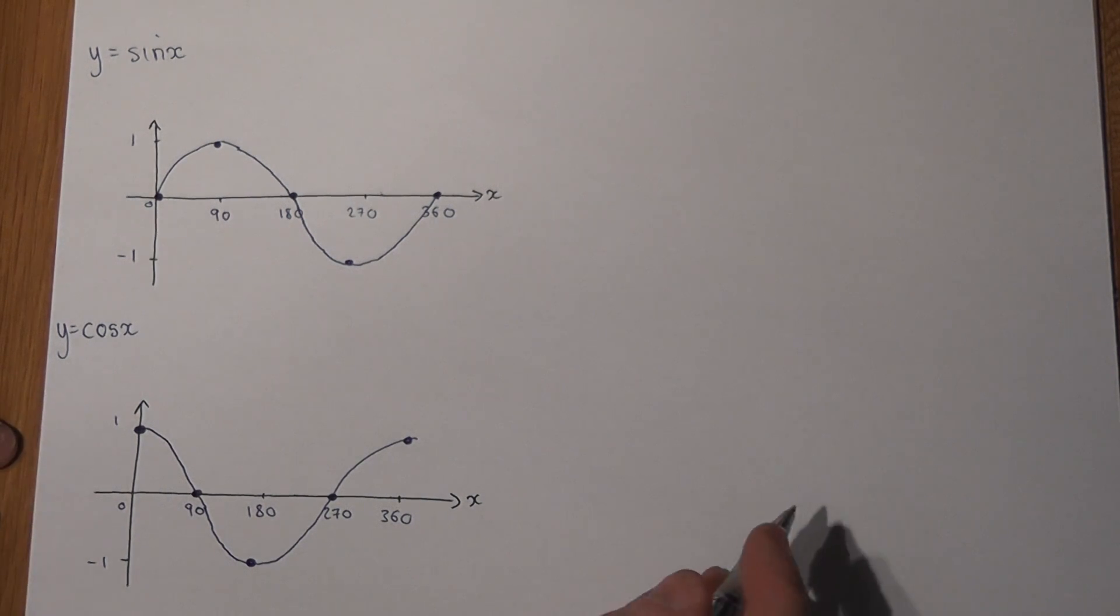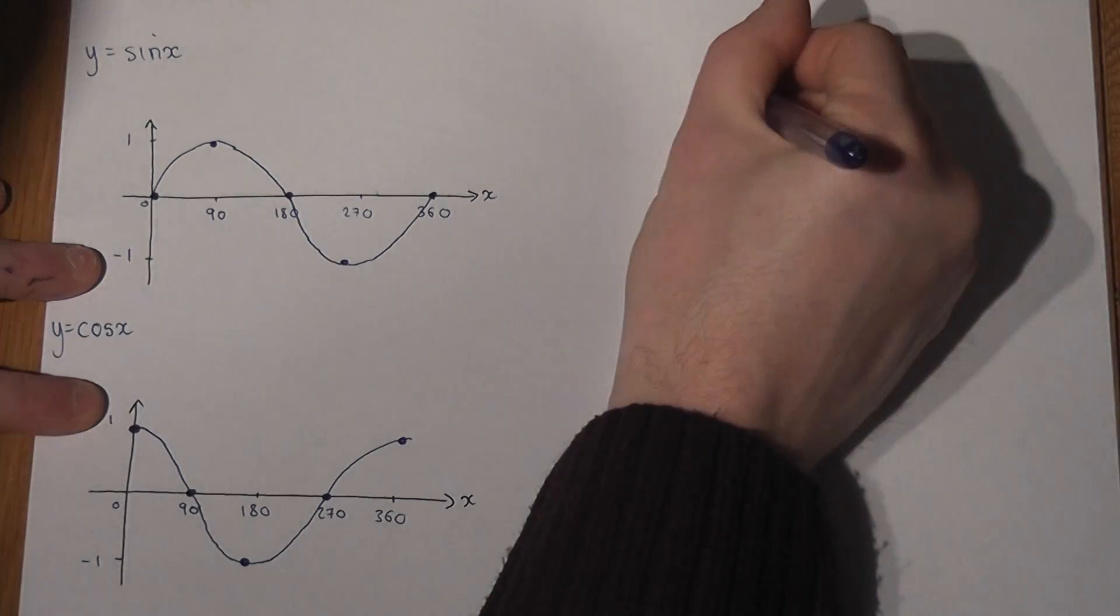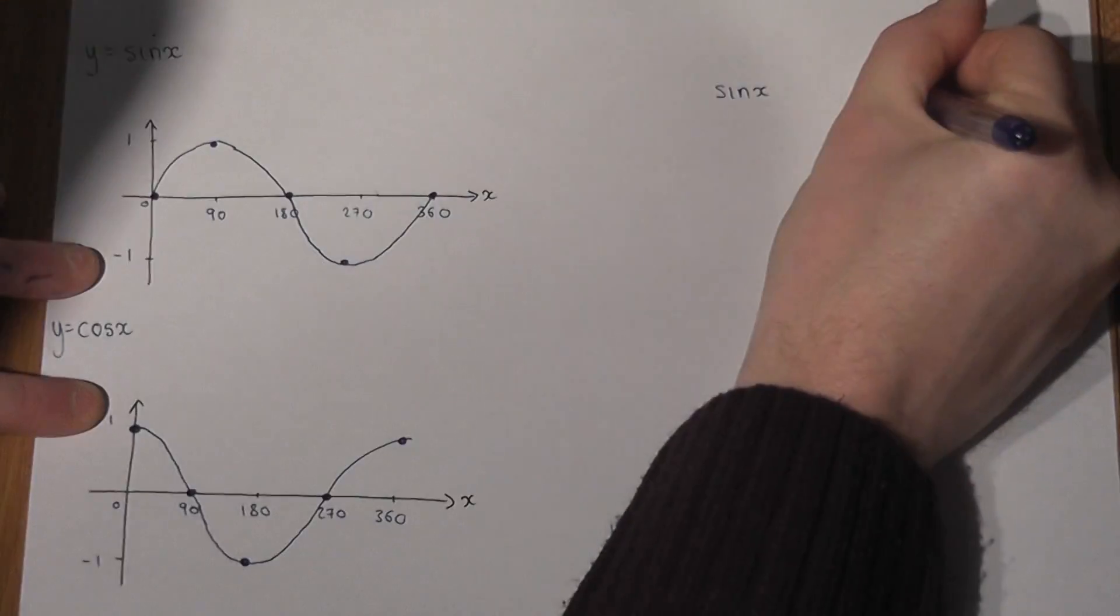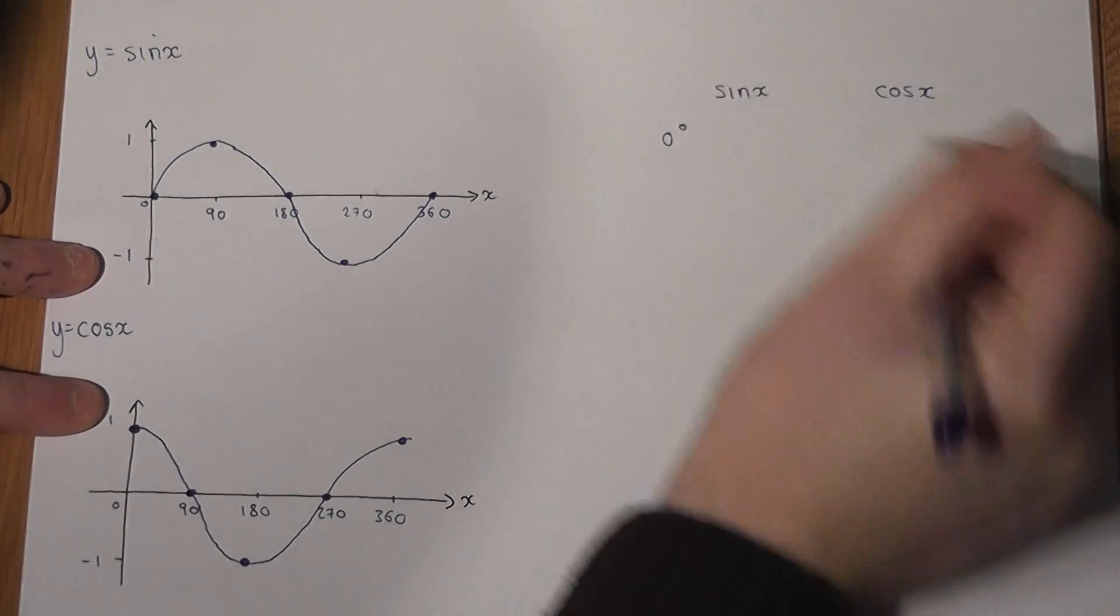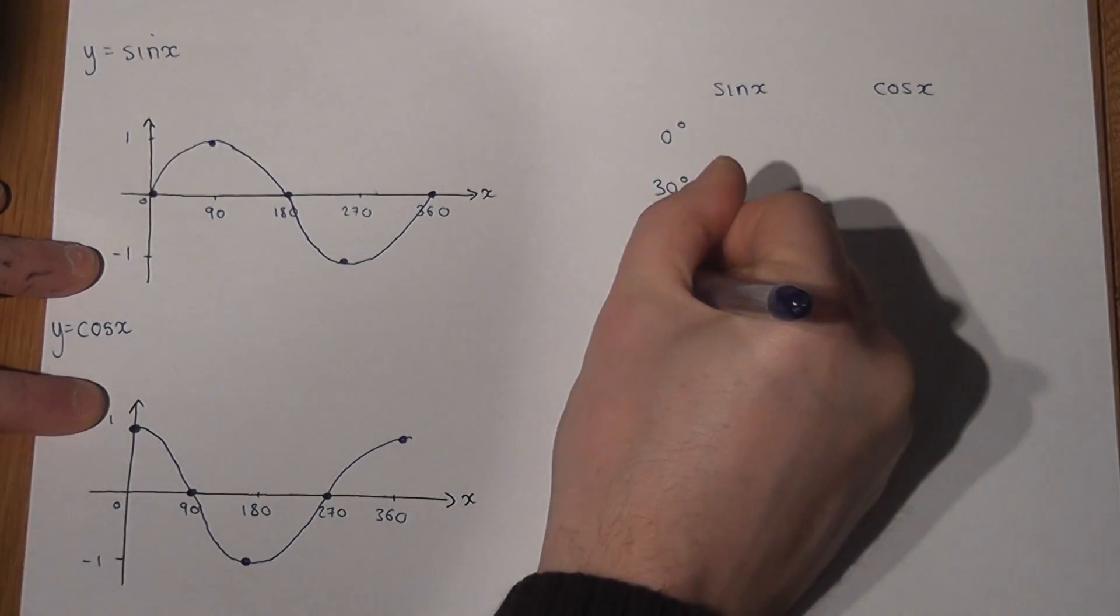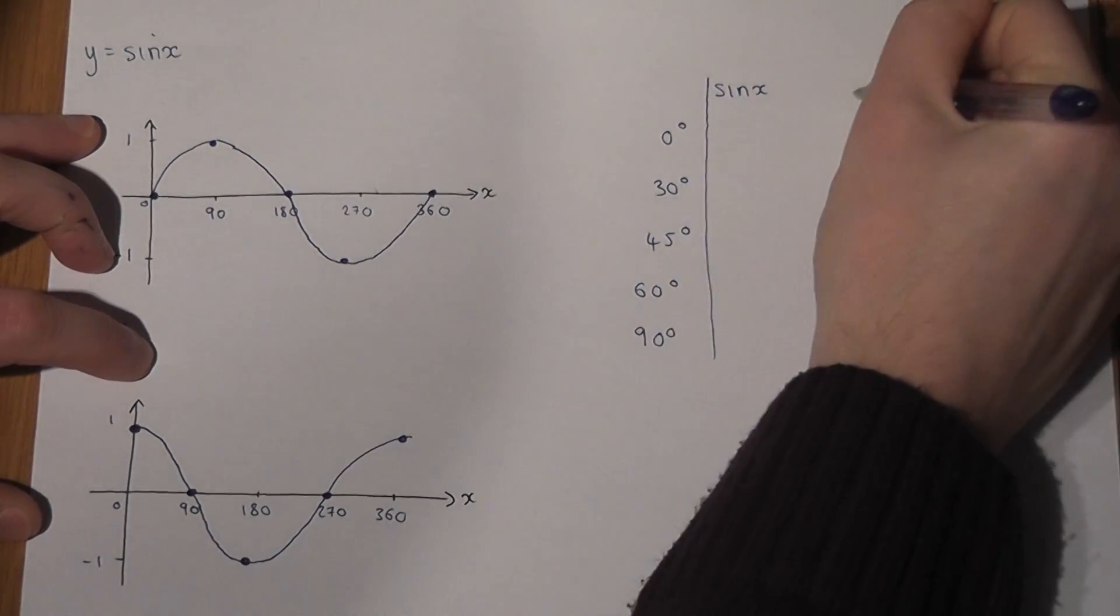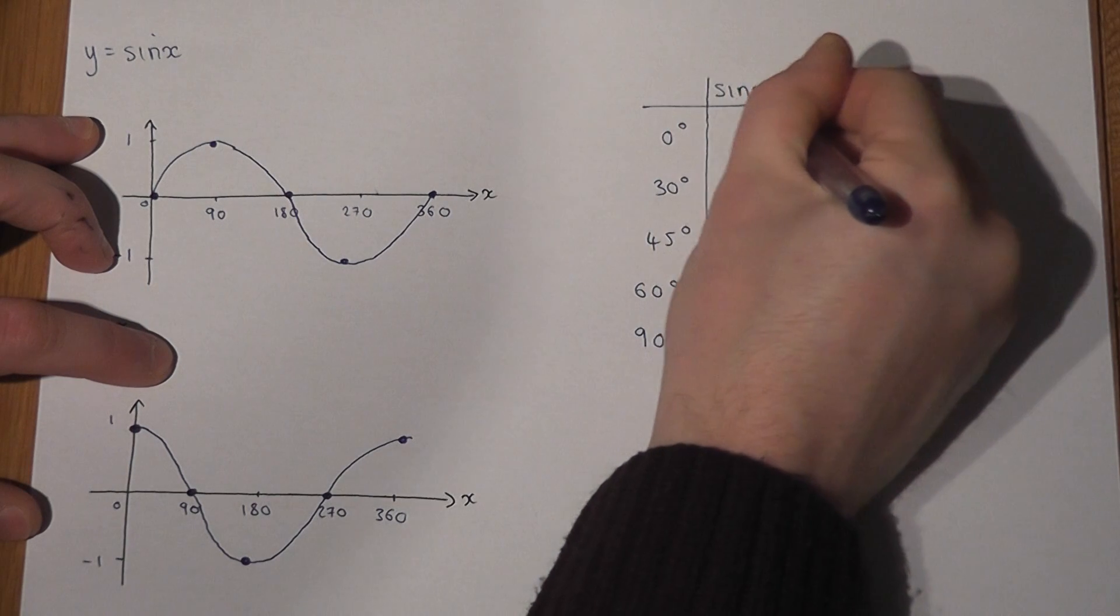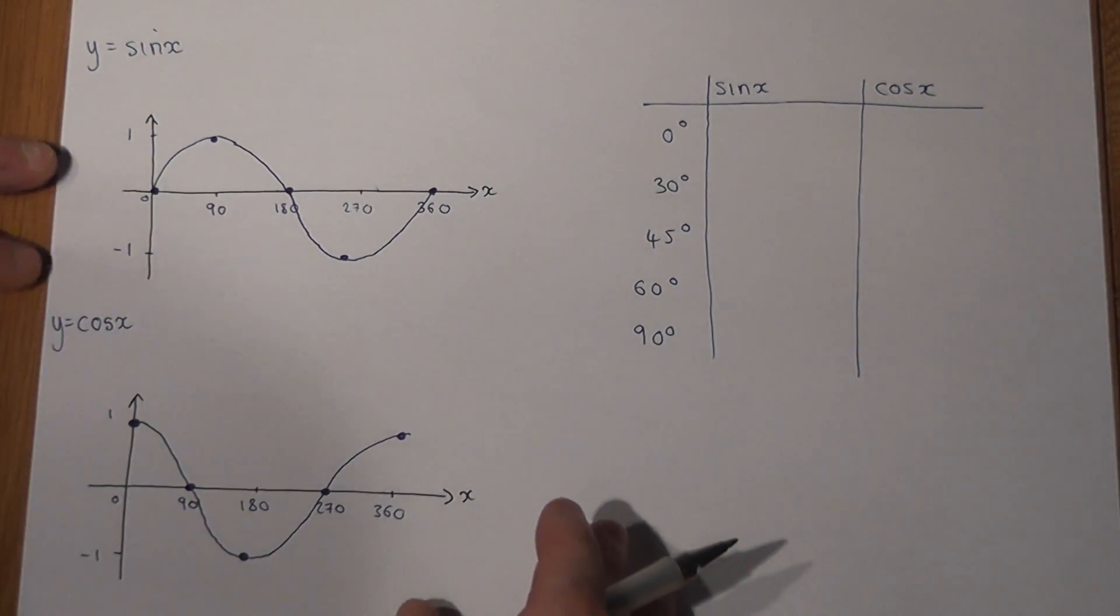Now within that, we've also got to know some key values, which I'm going to summarise in a quick table. So if we imagine sine x and cos x and the angles 0, 30, 45, 60 and 90, we need to know for the examination what sine and cos x actually equal at these values. And memorise this before the examination.